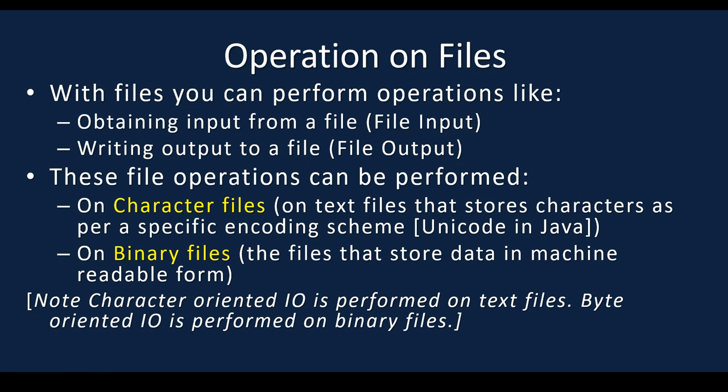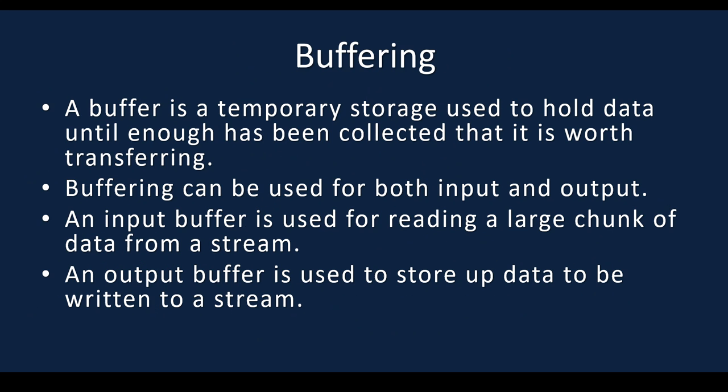These file operations can be performed on two types: character files and binary files. Character files are text files that store characters as per a specific encoding scheme — Java uses Unicode, so text files use this Unicode scheme to store characters. Binary files store data in machine-readable form, which is binary numbers. Character-oriented I/O is performed on text files, and byte-oriented I/O is performed on binary files. Future videos will cover how to create text files and binary files.